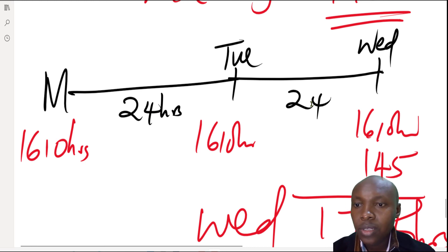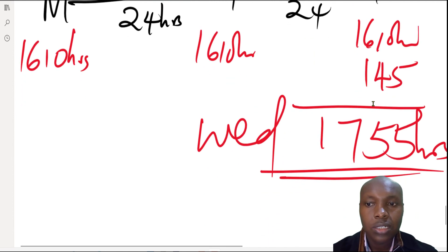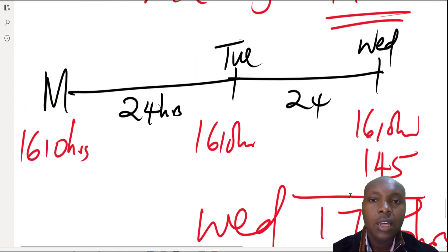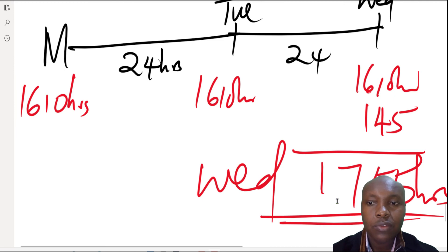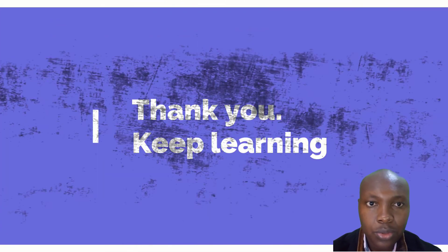Alternatively: Monday 16:10, after 24 hours → Tuesday 16:10, after another 24 hours → Wednesday 16:10. Those are 48 hours, leaving 1 hour 45 minutes. Adding gives Wednesday 17:55 hours. That is the day and arrival time at port B.